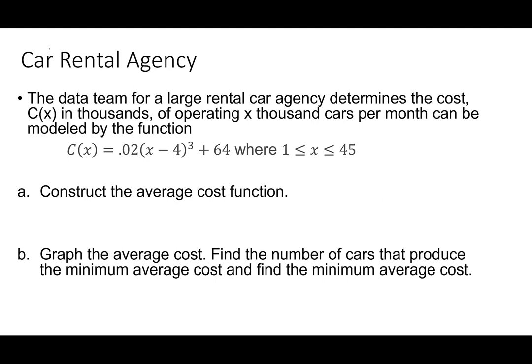Let's do one more on cars. The data team for a large rental car agency determines the cost C(X), in thousands, of operating X thousand cars per month can be modeled by C(X) = 0.02(X - 4)³ + 64, where 1 ≤ X ≤ 45. Part A: construct the average cost function. C̄(X) = [0.02(X - 4)³ + 64]/X. Part B: graph it and find the number that produces the minimum average cost.